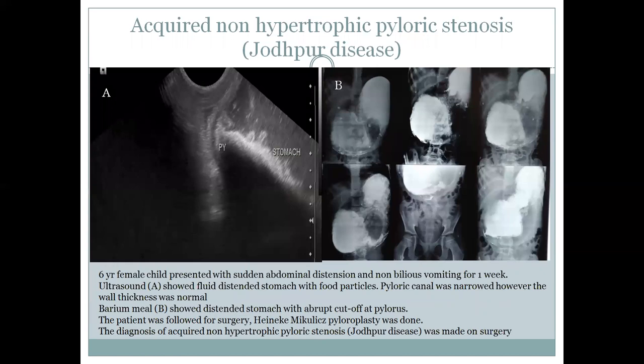A 6-year-old female patient presented with abdominal distension and non-bilious vomiting. The pyloric canal was narrowed on ultrasound; however, the wall thickness was within normal limits. On surgery, the patient was diagnosed with acquired non-hypertrophic pyloric stenosis.